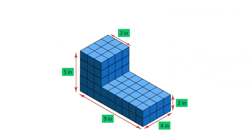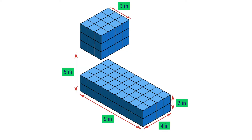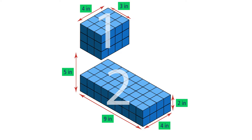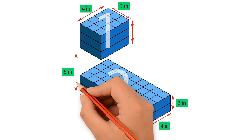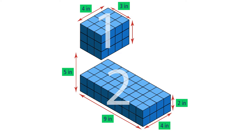Let's do the same example, but this time we're going to cut the figure horizontally instead of vertically. To find the volume of the composite figure, we need to add the volumes of both rectangular prisms, but first we need to find the length, width, and height of each prism. Notice that the width of prism 1 is the same as the width of the original figure. To find the height of prism 1, we subtract the height of prism 2 from the height of the original figure: 5 inches minus 2 inches gives us 3 inches. We already know the dimensions of prism 2, so we don't have to find them.